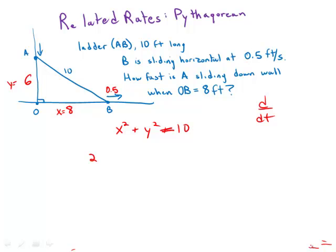And so, of course, what we get is 2X dx/dt plus 2Y dy/dt, oops, 2Y dy/dt equals 0 because the derivative of 10 is 0.